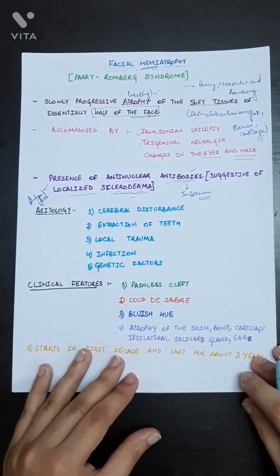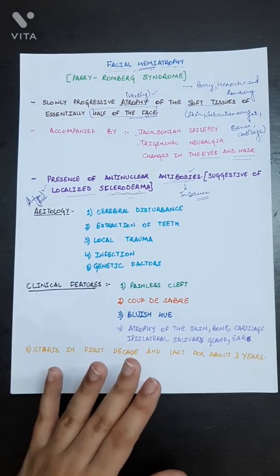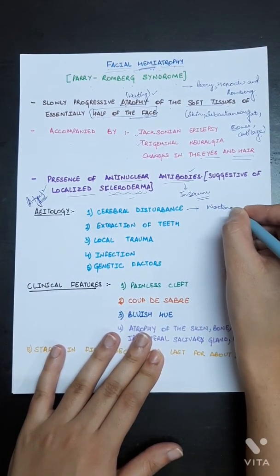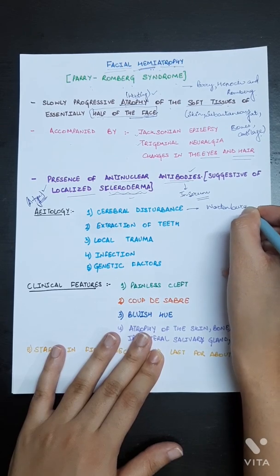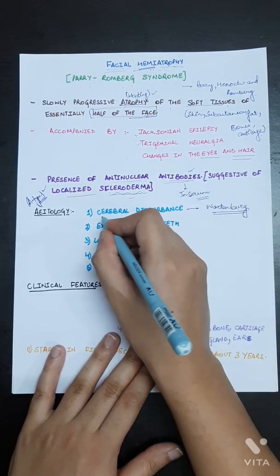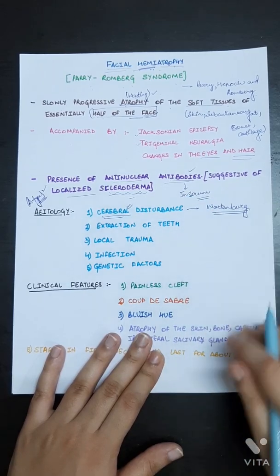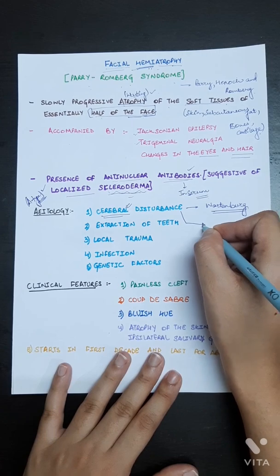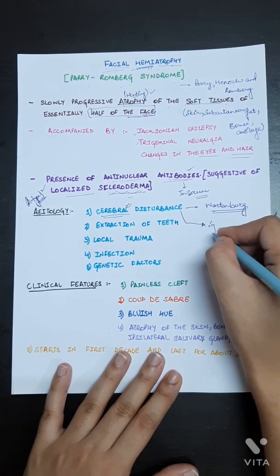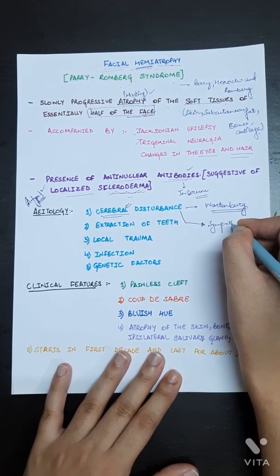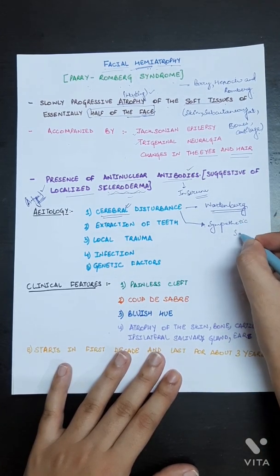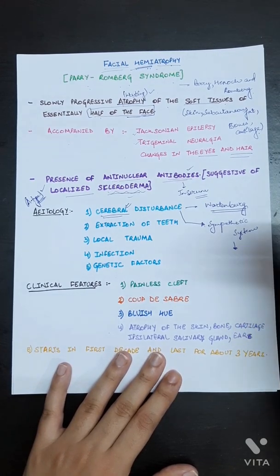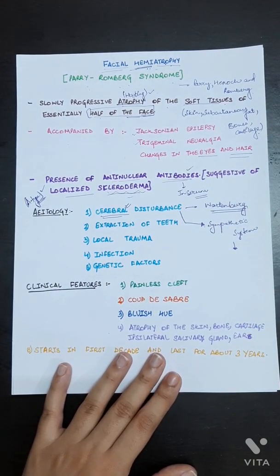Now the etiology part. Wartenberg suggests that Parry-Romberg syndrome is due to disturbances in the cerebral tissue. Due to cerebral disturbances, Wartenberg suggested that the sympathetic nervous system is not able to perform its normal functions. That's why facial hemiatrophy occurred.